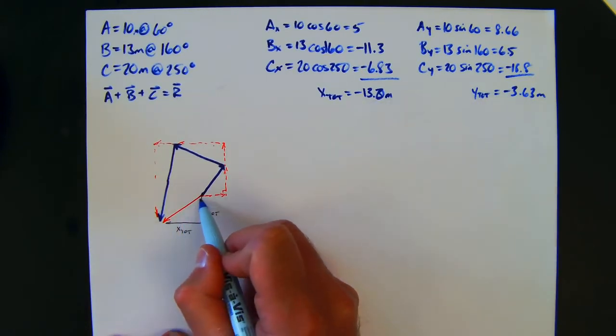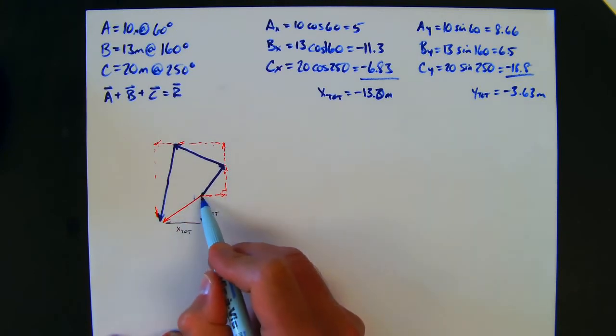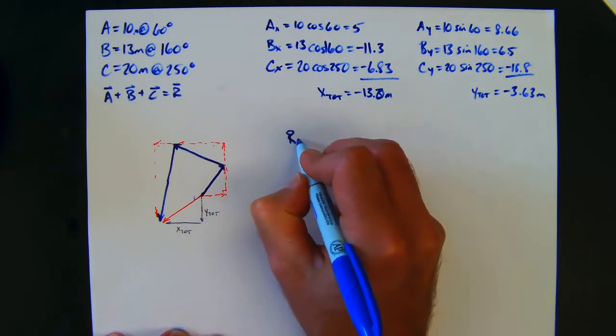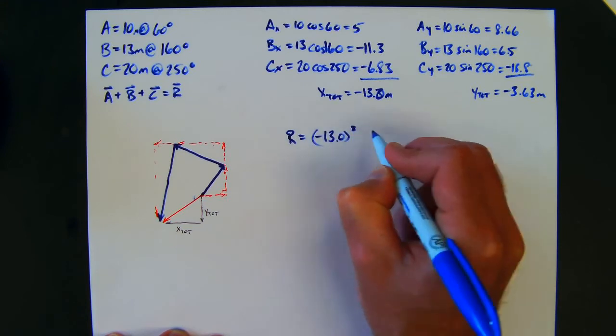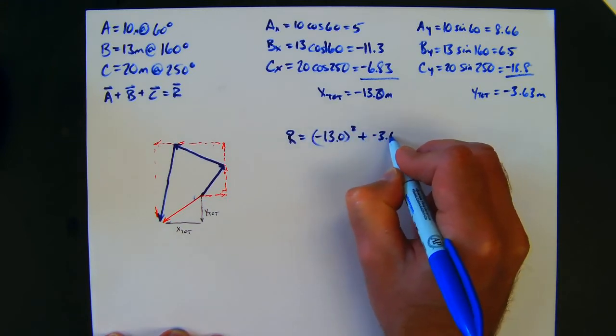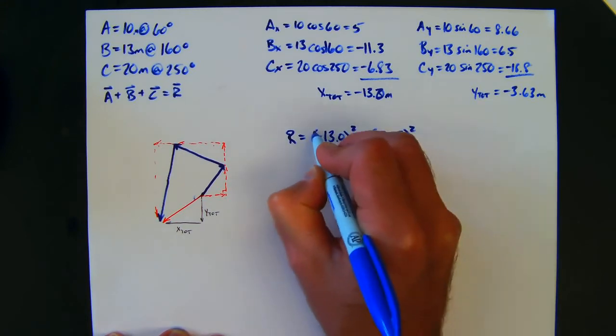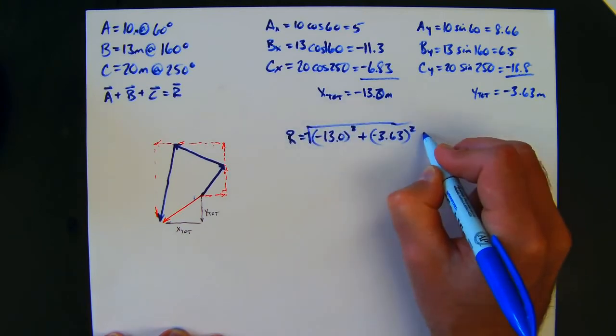Well, since I have two sides of that triangle, I can find the third side by just doing the Pythagorean theorem. So negative 13.0 squared plus negative 3.63 squared and square rooted, and that's going to give me a value of 13.6 meters.